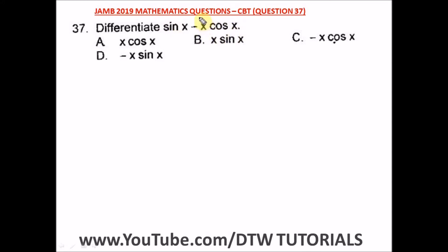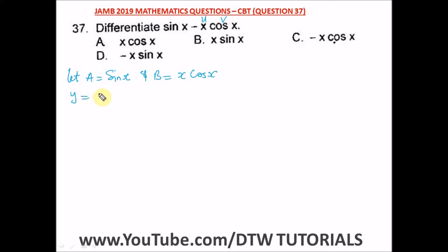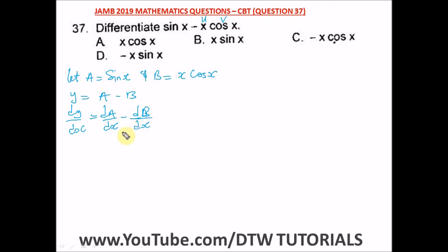This part is the product rule where you have a u and a v. Let's say a is equal to sine x and b is equal to x cos x. So our y is equal to a minus b. Then our dy/dx will be equal to da/dx minus db/dx.